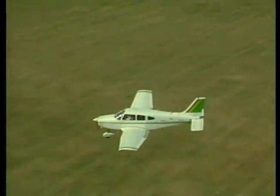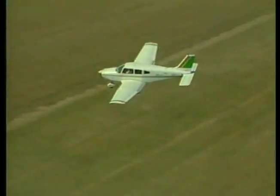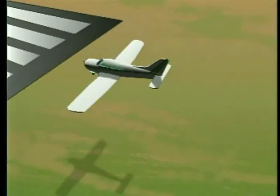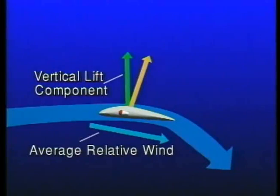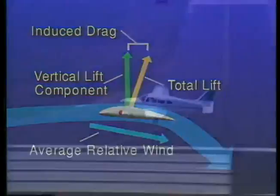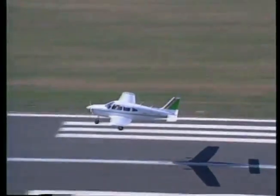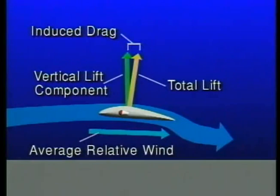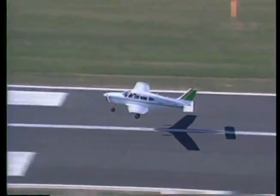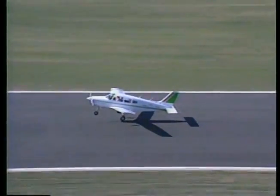The phenomenon known as ground effect occurs when the Earth's surface interferes with normal airflow patterns, thus causing a reduction in induced drag. During flight at altitude, the downwash created by wing tip vortices causes the average relative wind to be inclined downward. Because lift acts perpendicular to the average relative wind, total lift is inclined aft — the component of lift acting in a rearward direction is induced drag. As your airplane descends to within one wingspan of the ground, the wing tip vortices and resulting downwash are deflected horizontally, moving the average relative wind closer to the horizontal and increasing the vertical component of lift, thus decreasing induced drag. As a result, the airplane tends to fly longer in ground effect or float down the runway.